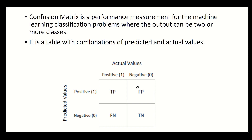Here we are taking only two classifications — binary classification, either two or one — but it could actually be more than two classes. You can use a confusion matrix for binary classification, but it can also be extended to multi-class classification.